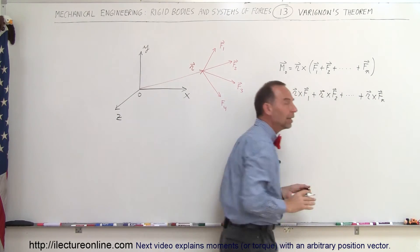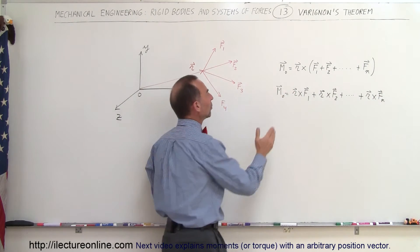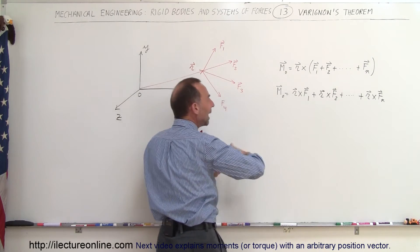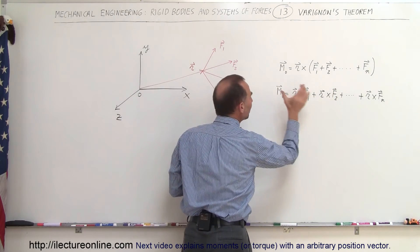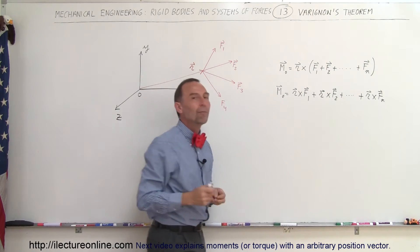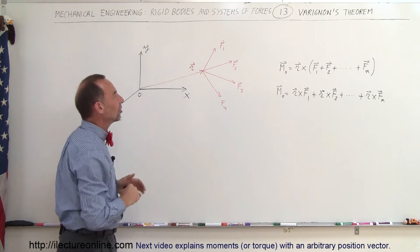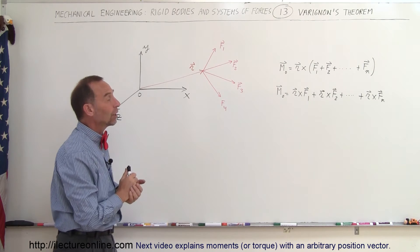So we can go ahead and simply do the vector product between the position vector and each of the forces independently, add them all together, and that will then be the sum of the moment of the position or the moment of the situation in this case of the particular problem that we're dealing with.